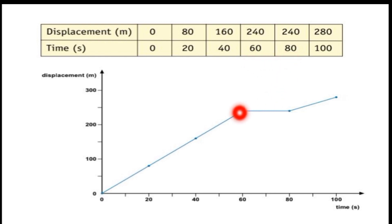Looking at the graph we can see three distinct sections. The first section shows a straight line with a gradient sloping upward from zero to 60 seconds at 240 meters. Then it becomes horizontal from 60 to 80 seconds. Finally it slopes upward again.